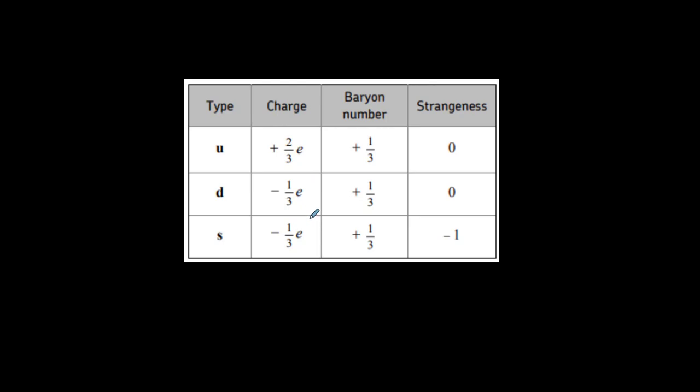Only the strange quark has strangeness, a strangeness of minus one. For every type of quark, there is an anti-quark with the opposite properties.